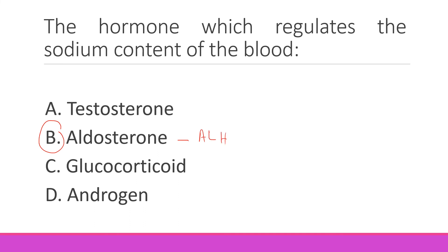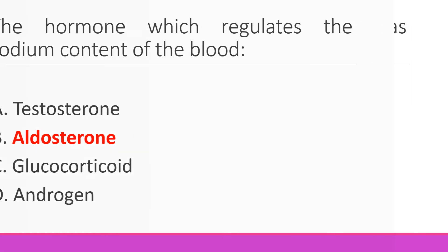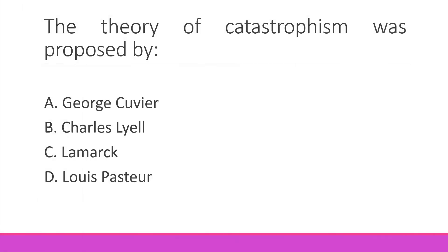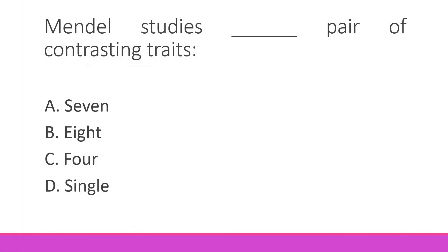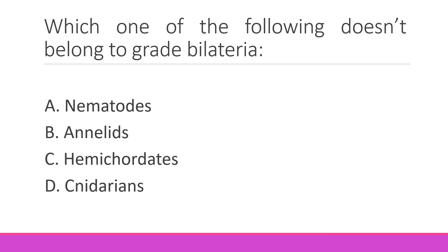The theory of catastrophism was proposed by — right option alpha. An example of non-allelic interaction is also given. Which one of the following doesn't belong to bilateria? Those belong to radiata — right option delta.